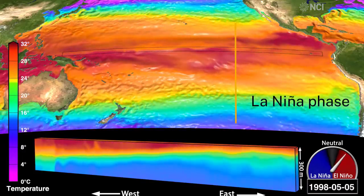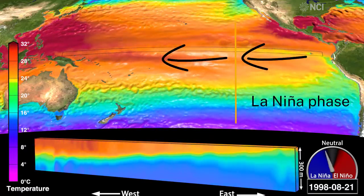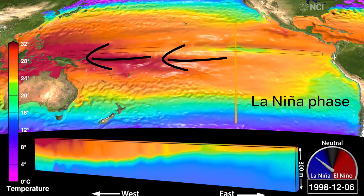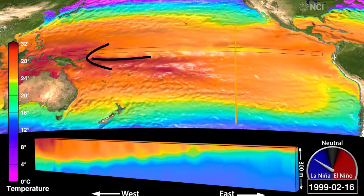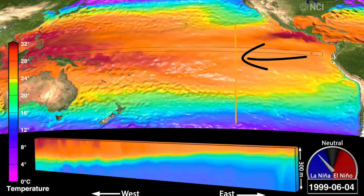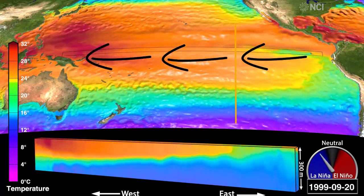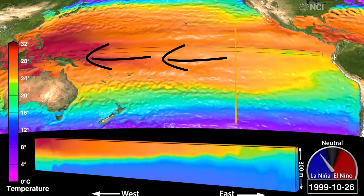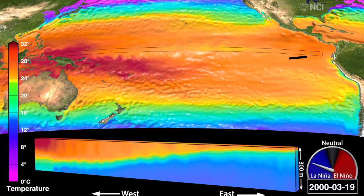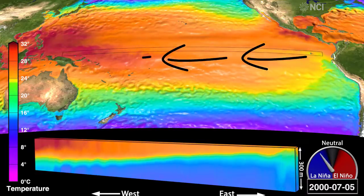In contrast, La Niña is the neutral phase taken to the extreme, in which the trade winds intensify and can pile up much hotter water closer to Australasia. This has the impact of producing a lot more precipitation and rain within Australia — and that is, for example, what we have seen this year.